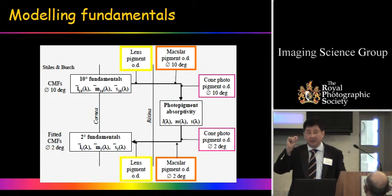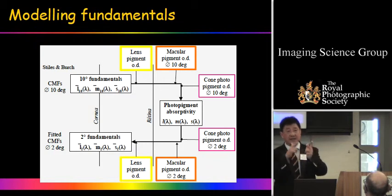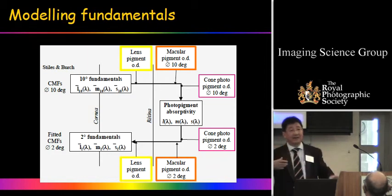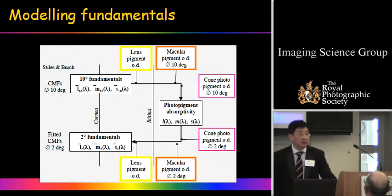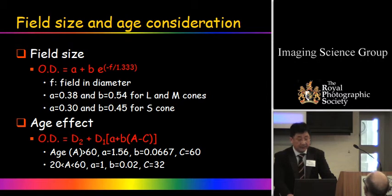Once you have cone-matching functions corresponding to a particular field size and age, you compute the color-matching functions which can be applied in typical applications such as color difference and color appearance predictions. This captures field size and age as continuous functions, some of which are not currently being applied.